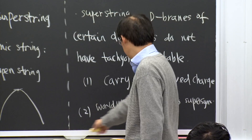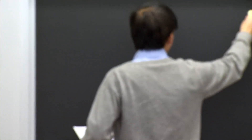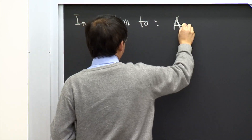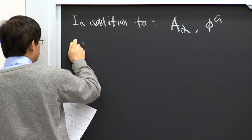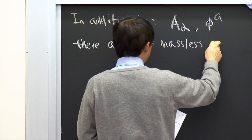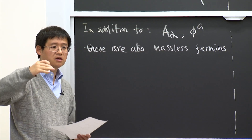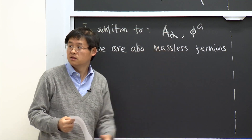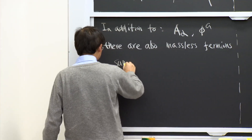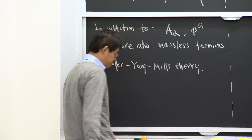In addition to the gauge field Aα and scalar fields φ_A that we already see in the bosonic string, there are also massless fermions from the open string excitations. The low energy theory combining all of these is a supersymmetric Yang-Mills theory — a super-Yang-Mills theory.